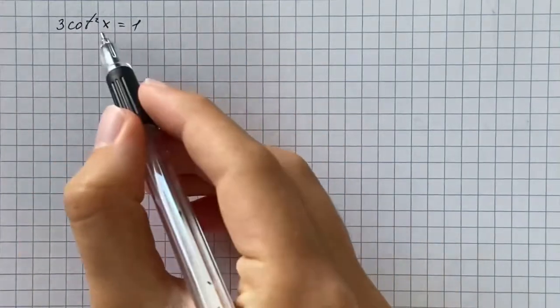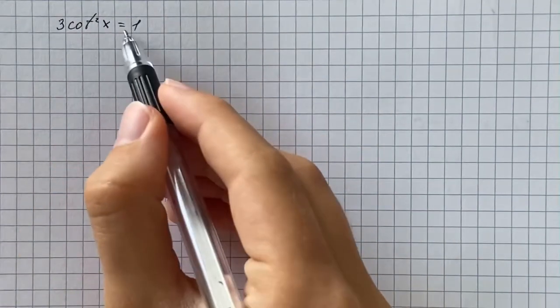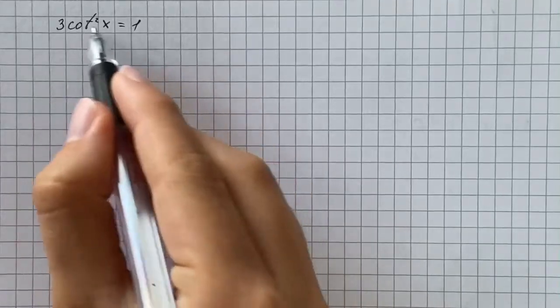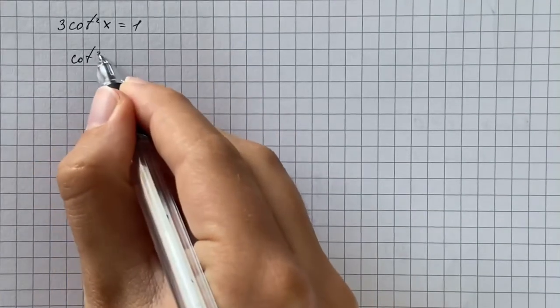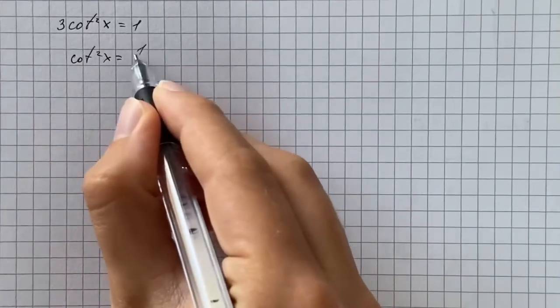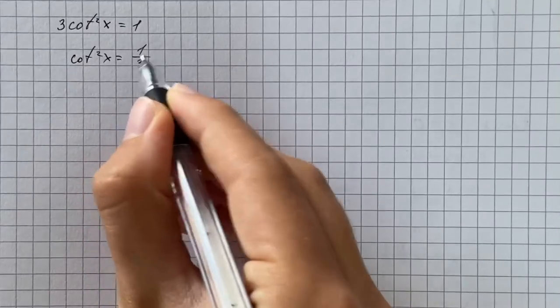So we have to solve the given equation, that's 3 cotangent squared of x equals 1. At first we're going to divide both sides of the equation by 3, so that's going to be cotangent squared of x equals 1 third.